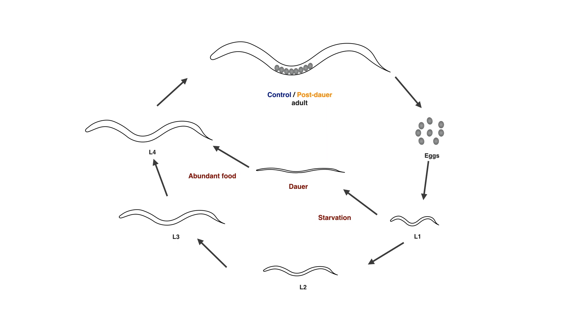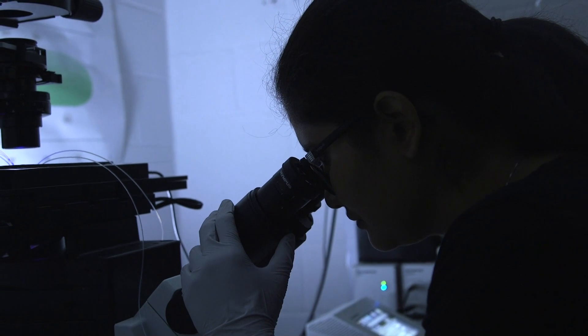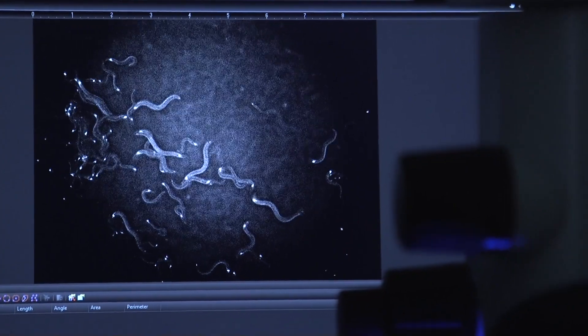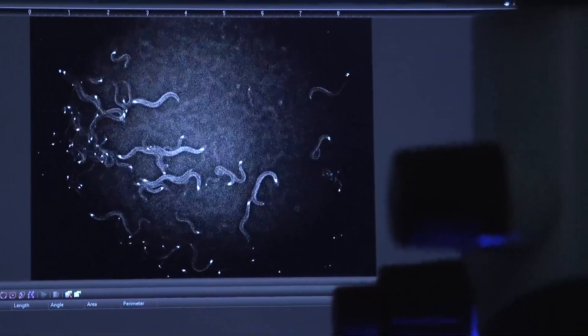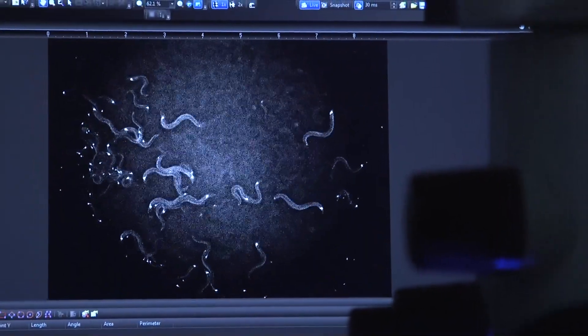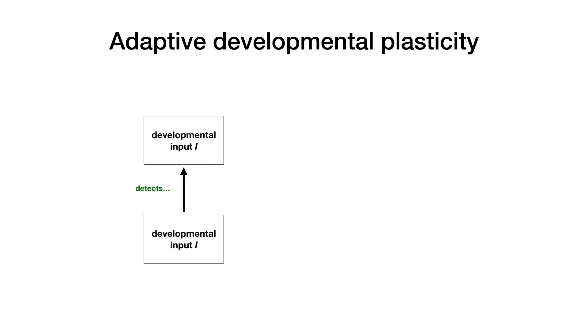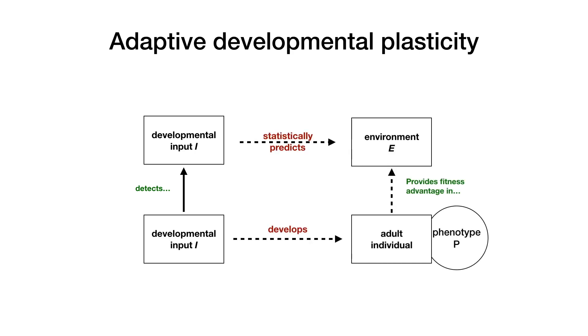Most C. elegans sampled from the wild have been found in this dauer stage. We asked whether animals remember this starvation in early life and if post-dauer animals change their foraging or food search behavior in response to this experience. We based our study on two theoretical models from ecology. The first is the adaptive developmental plasticity hypothesis, which states that animals use environmental conditions from early development to predict the future environmental conditions they'll encounter as adults.